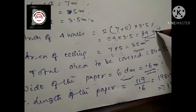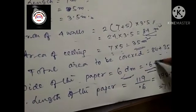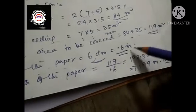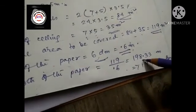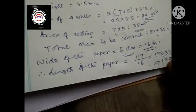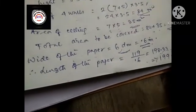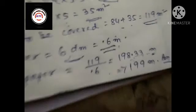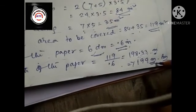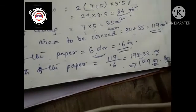Length of the paper is equal to 119 divided by 0.6, which means 198.33 meters. Since paper must be bought in minimum 1 meter lengths, the length of paper required will be 199 meters. This is the answer.